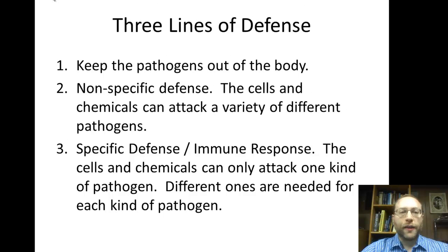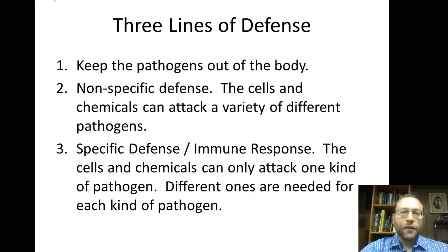As we learned before, there are three lines of defense. The first line of defense is to keep pathogens out of the body. The second line of defense is a nonspecific defense, which means that our cells and the chemicals that our cells make can attack a variety of different pathogens. By nonspecific, that means a cell that can attack salmonella bacteria is also able to attack another kind of bacteria, a virus, or any other kind of pathogen.